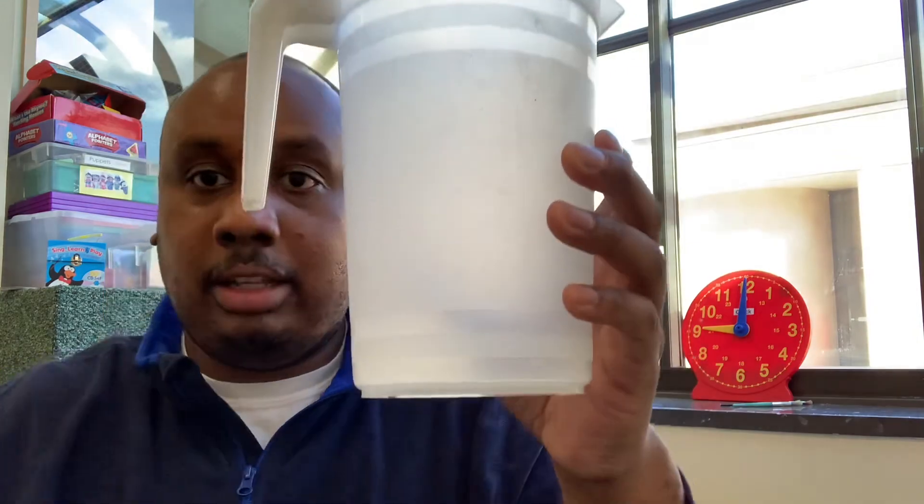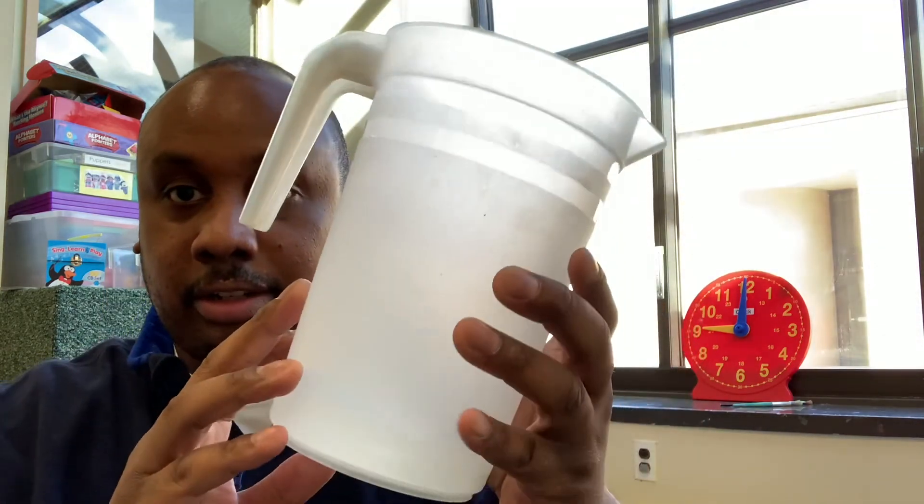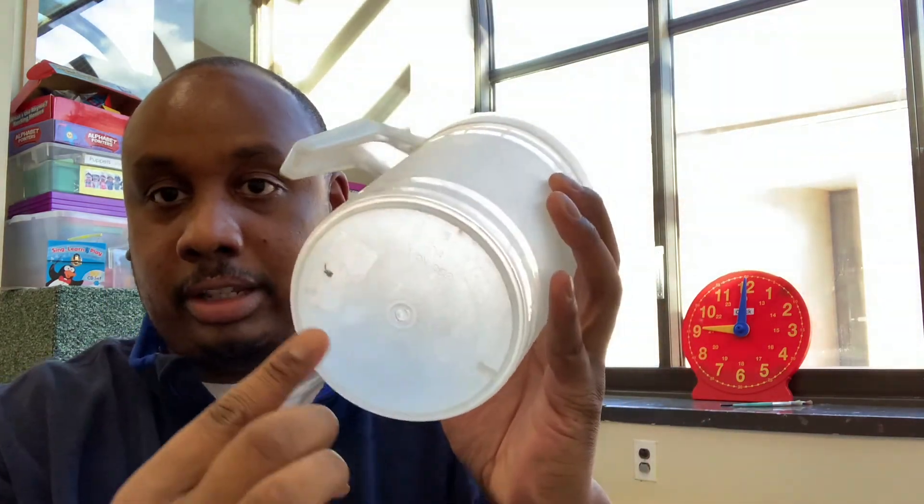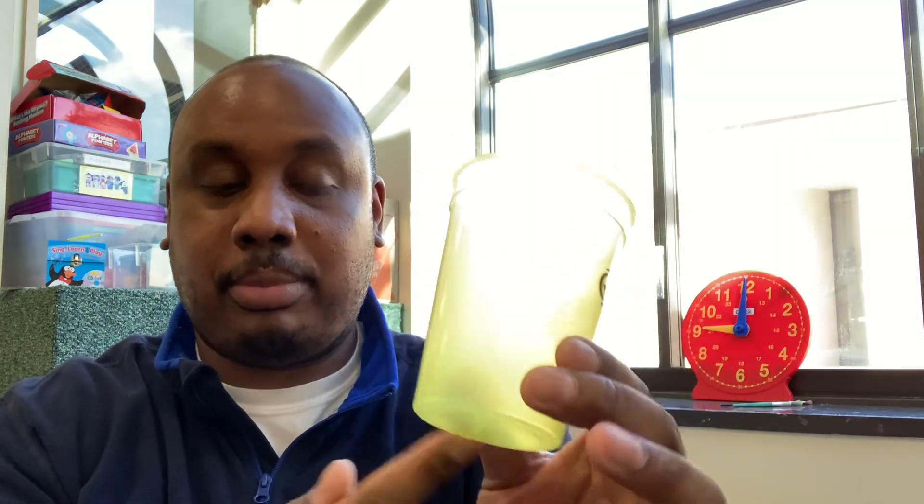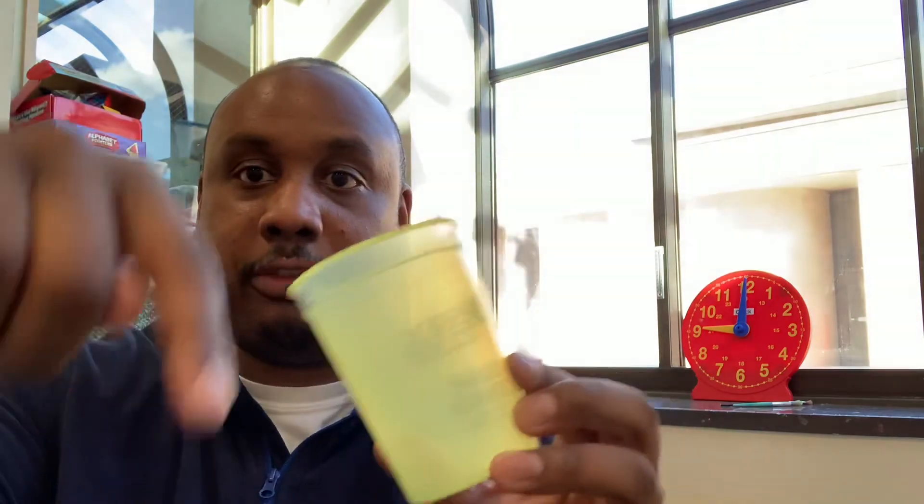A pitcher. You put juice in it. Water. What does this look like? A cylinder. It's round at the bottom and round at the top. This is also a cylinder. It's round at the top and round at the bottom and one continuous face.